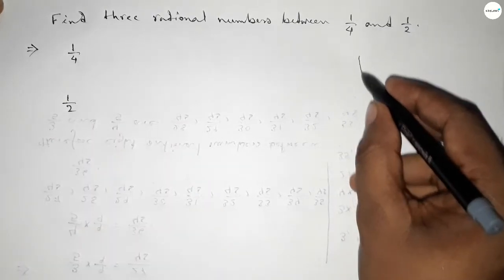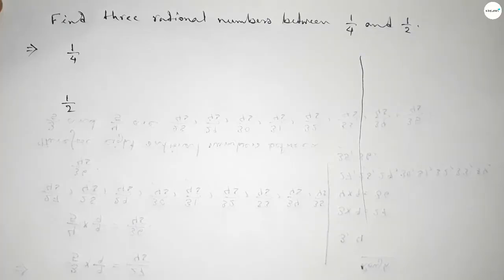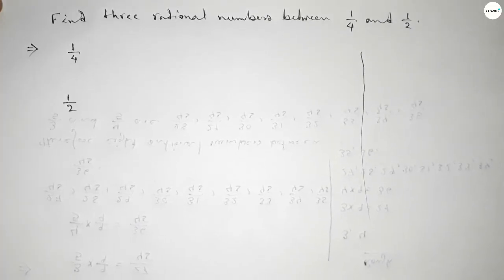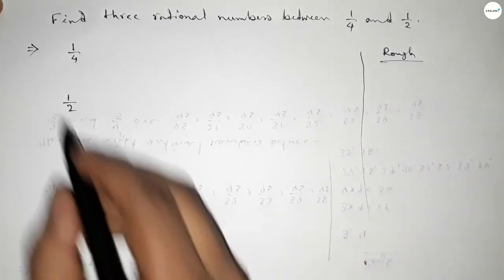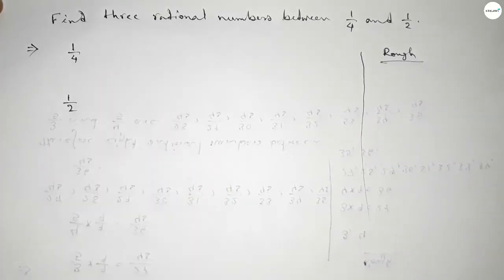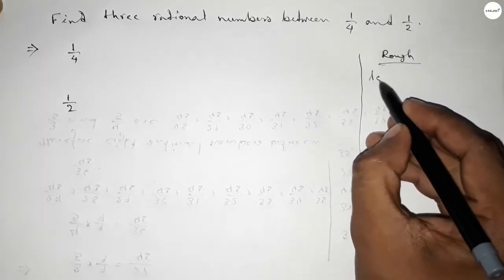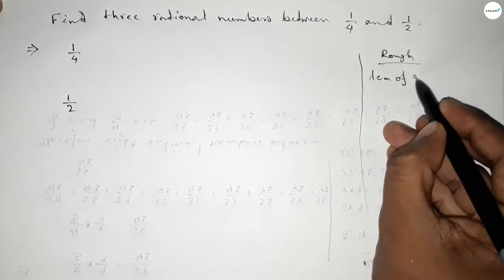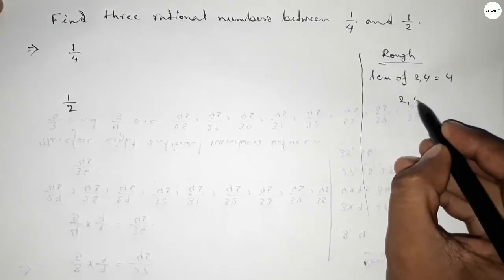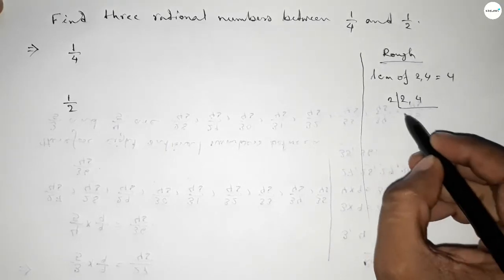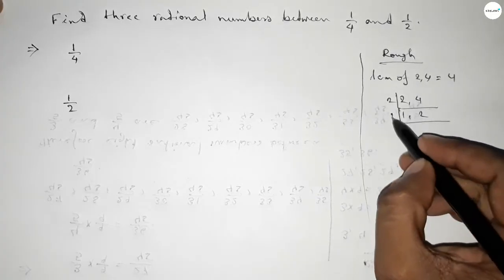Now let's do some rough calculations here. The denominators of both are not the same, so first we have to find the LCM of 2 and 4. Their LCM is 4. If you factorize these, this is divided by 2, also this is divided by 2, so this is 4.